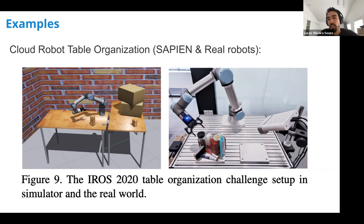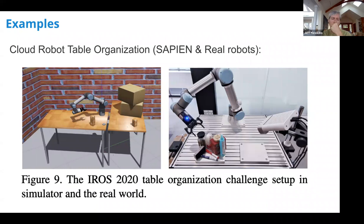Another example is the cloud robot table organization challenge from IROS 2020. The goal was to train in a virtual environment but test on an actual robot. The task involves moving objects from one side of a table to the other. All these challenge examples use geometric goal specification — the easiest approach, where you simply provide the bounding box of where the object should be.